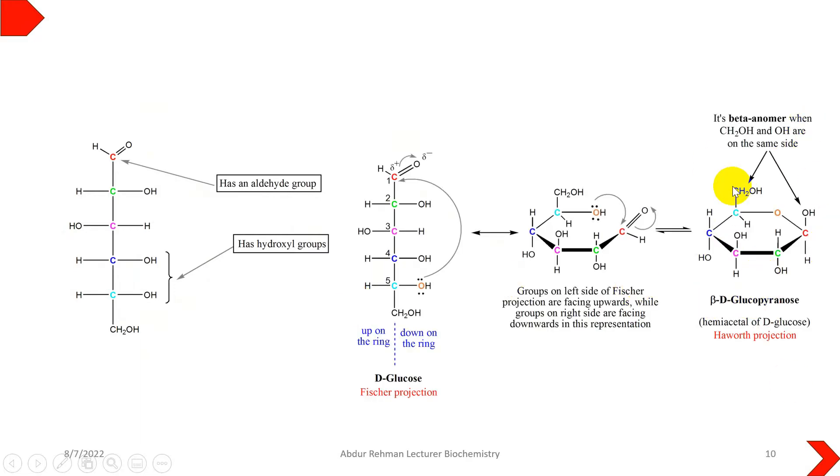The conversion from linear to cyclic structures occurs due to the ability of the hydroxyl group at carbon number five or four to react with aldehyde or ketones. Thus, monosaccharides having more than four carbons usually exist as cyclic form.